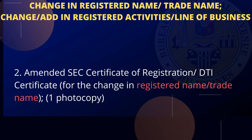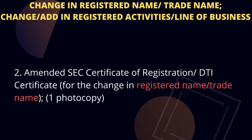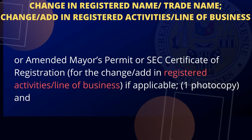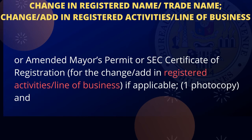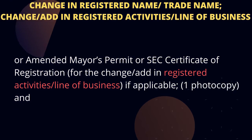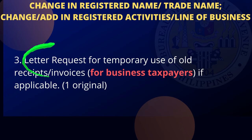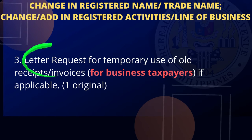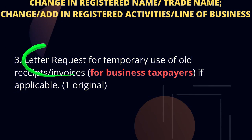Two, amended SEC certificate of registration or DTI certificate for change in registered name or trade name, one photocopy. Or amended mayor's permit or SEC certificate of registration for change or add in registered activities or line of business, if applicable, one photocopy. And letter request for temporary use of all receipts or invoices for business taxpayers, if applicable, one original.